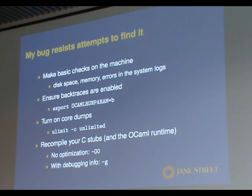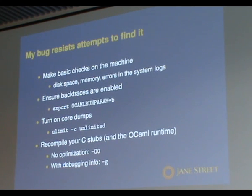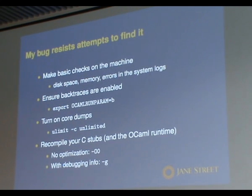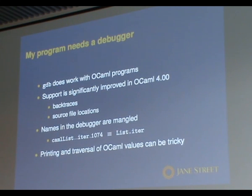If you're having anything to do with C stubs, make sure you compile with debugging info and with no optimization. Optimizing compilers confuse debuggers quite badly, and it may not always be obvious that the value of a variable you're looking at in GDB is actually wrong because of some optimization. Contrary to common belief, GDB does work with OCaml native compiled programs. Everything in this talk is basically about native code.